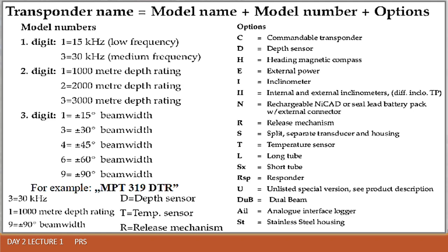Manufacturers can include other option codes in the manuals. For example: C means commandable transporter, T means depth sensor, H means heading magnetic compass available, E means external power may be connected to the beacon, and so on. Before using any equipment, it is important to find out what functions are available, and the source of that information is always the producer's manual.